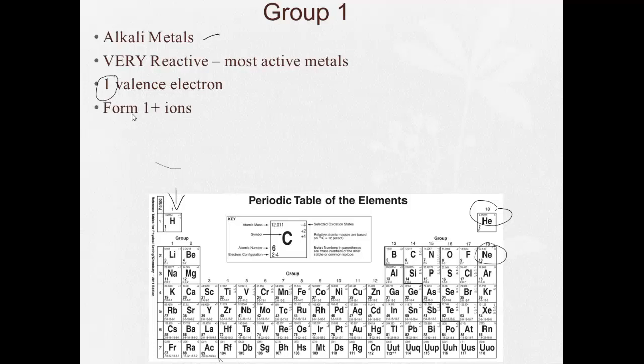So they tend to form 1+ ions. You can really write it either way. I always go back and forth. Now remember, when something forms a positive ion, it's losing electrons.